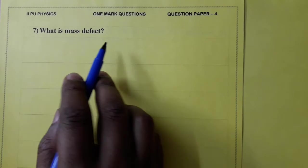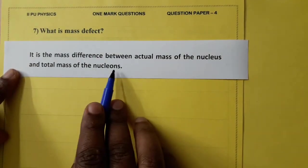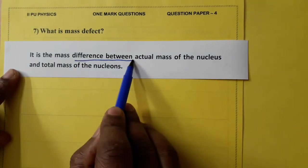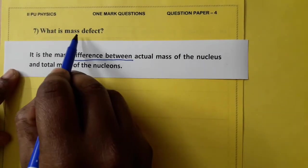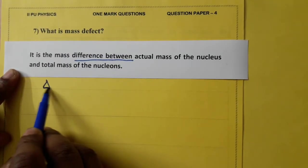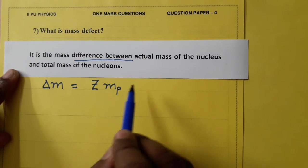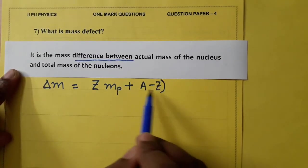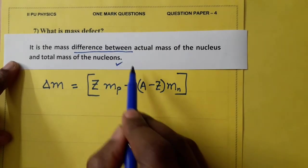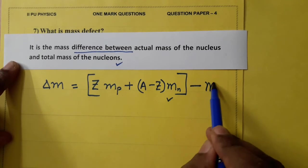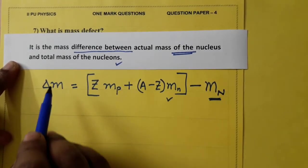What is mass defect? It is the mass difference between actual mass of the nucleus and total mass of nucleons. Let us write equation also. This statement is enough for this question, but equation mass defect denoted by delta m equal to z times mass of each proton plus a minus z times mass of each neutron. This gives total mass of the nucleons minus mass of the nucleus capital M. So, difference between these two is a measure of mass defect.